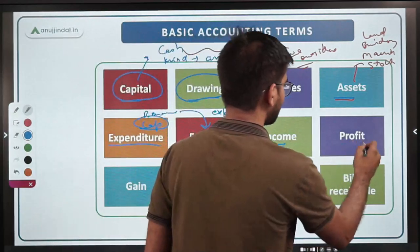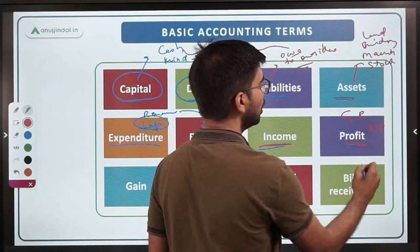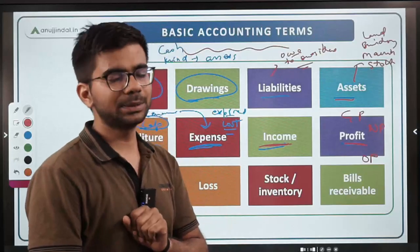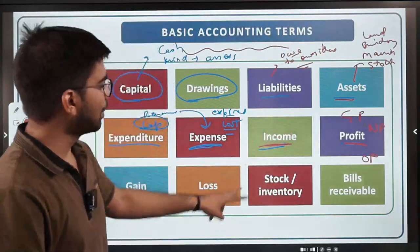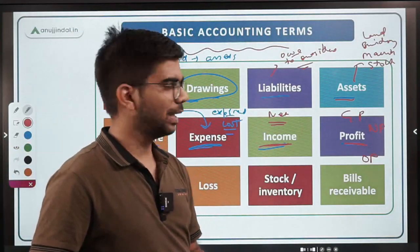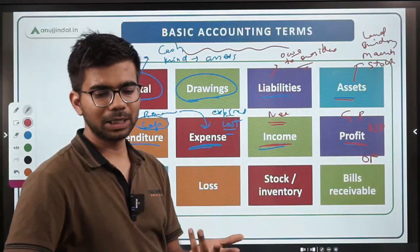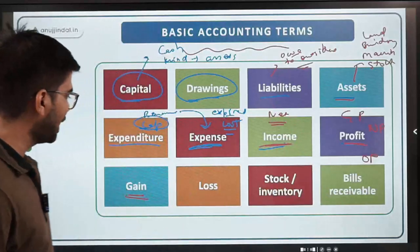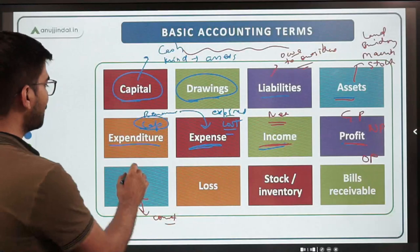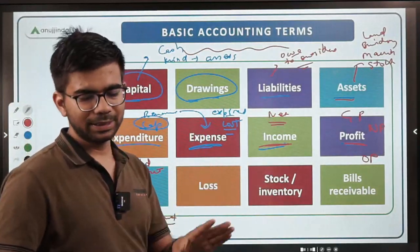Income and profit are different. Profit can be gross profit, net profit, or operating profit. For gross profit, you only subtract cost of goods sold from revenue — not all expenses. Income generally means net income — after subtracting all expenses from revenue. Gain is different from profit: profit is of a regular nature from your business operations, whereas gain is unexpected — for example, winning a court case and receiving compensation, or selling an old asset at a profit. That is called gain.